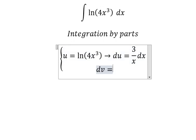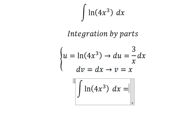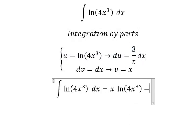dv equals to dx. The integration of this one, we have v = x. So we have u multiplied by v minus du multiplied by v.